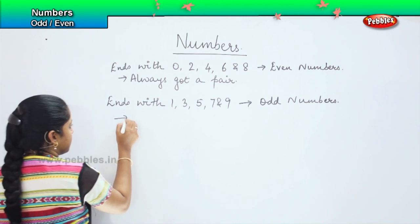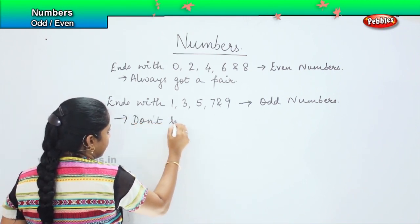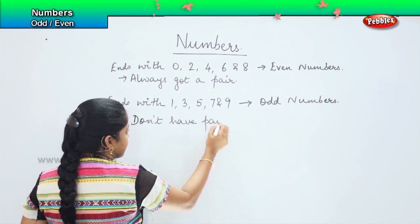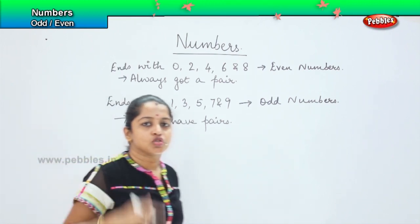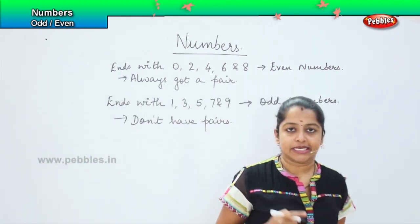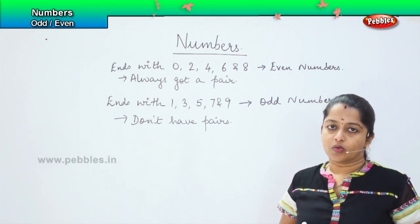And these numbers, they don't have pairs. One of them will always be single. You cannot find a pair with the odd numbers.